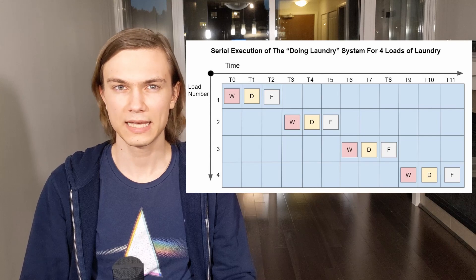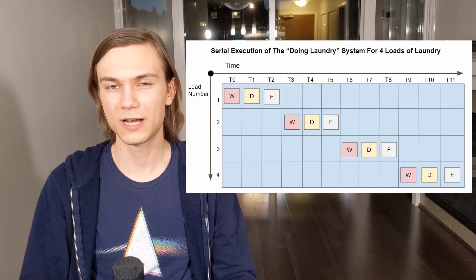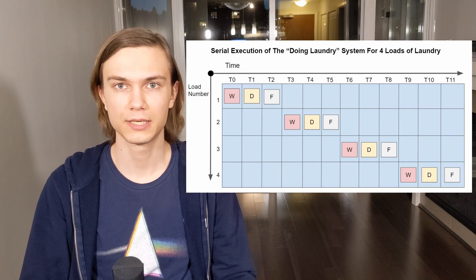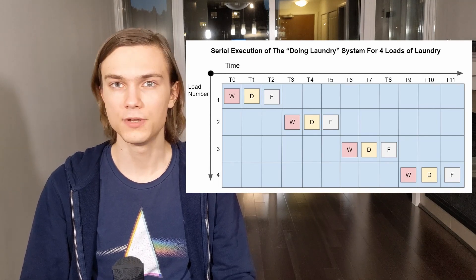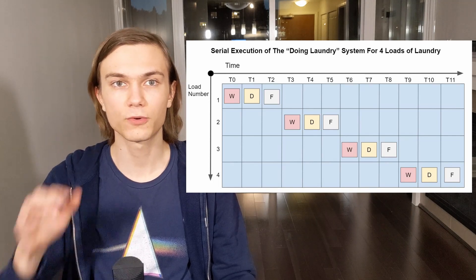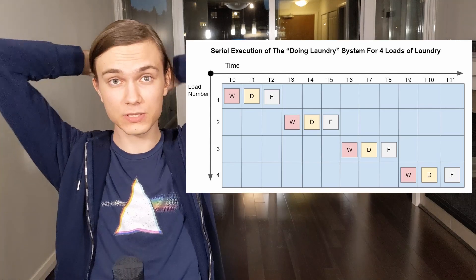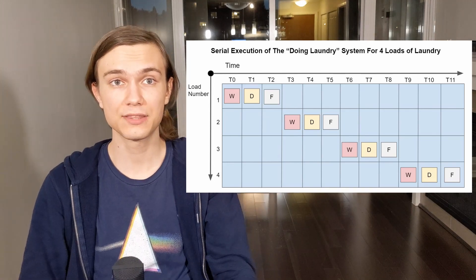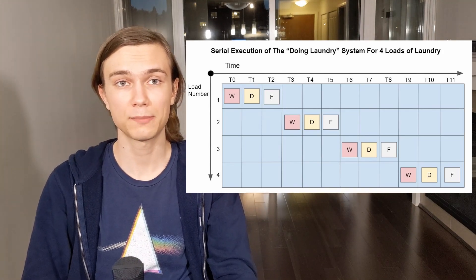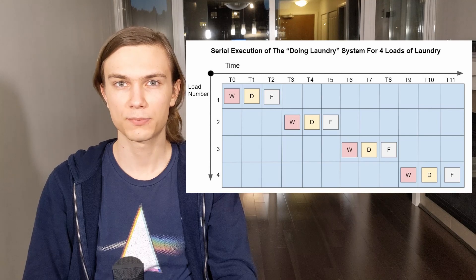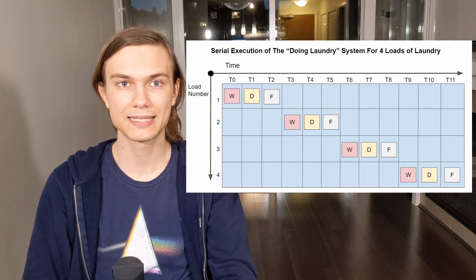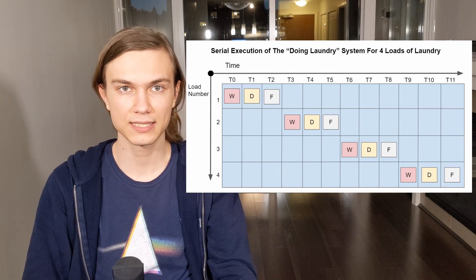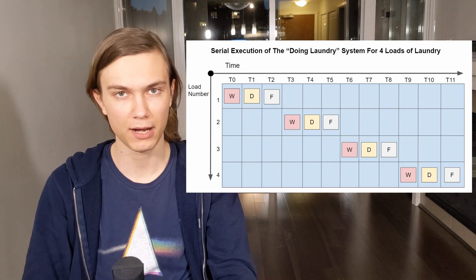The thing is, I can't imagine that anyone actually does laundry serially. They intuitively execute different stages of the doing laundry process in parallel. Nothing is stopping you from washing the second load while the first load is drying. And this is exactly the idea behind pipelining. The prerequisite for pipelining something is being able to execute the different stages in the process in parallel.